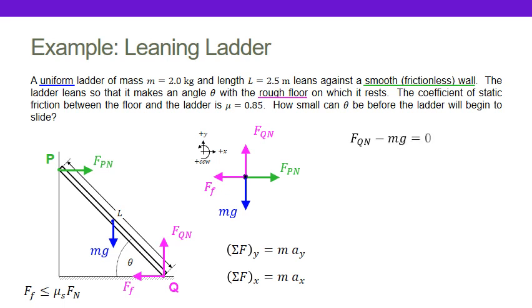In the vertical direction, I've got the normal force from the floor as a positive force, and the weight of the ladder pointing downwards as negative — summing to zero. In the horizontal direction, the force of the wall minus the force of friction equals zero. There are my Newton's law equations.